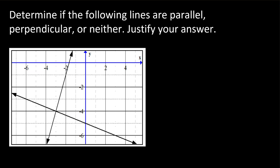The first thing we're going to do is pick some really convenient points on both lines. I'm going to designate one as L1 and the other as L2. For L1, some convenient points are right here — let's call that point A, and point A is negative three comma negative four. I see another convenient point on L1; let's call it B, and point B is negative two comma negative one.